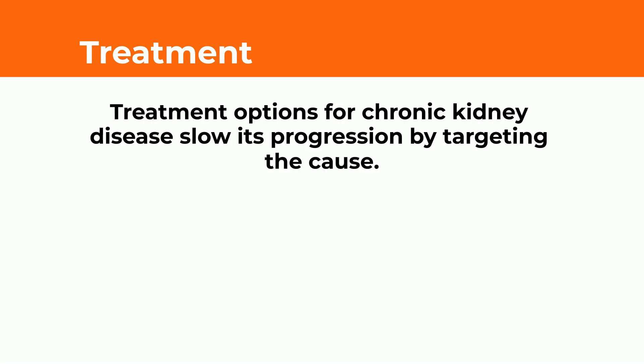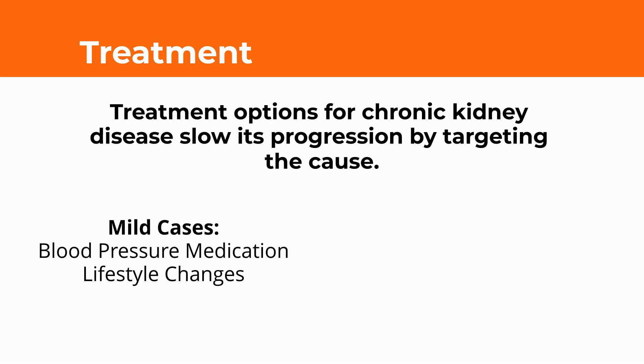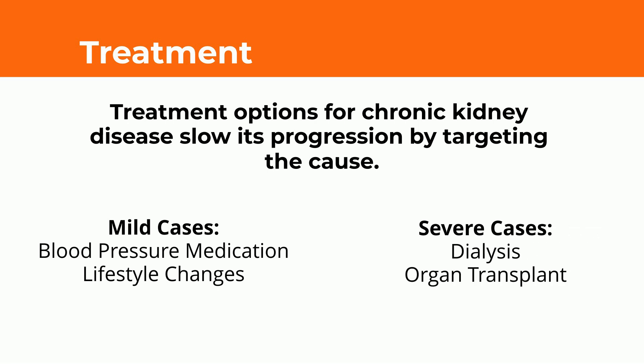Treatment options for chronic kidney disease target the cause of the kidney damage and aim to slow its progression into kidney failure. In less severe cases, lifestyle changes such as diet and exercise are recommended. Medications that deal with problems associated with chronic kidney disease can also slow its progression — for example, medication to manage high blood pressure in CKD patients with hypertension. In severe cases where CKD becomes kidney failure, a patient would either need dialysis treatment, which removes waste from the blood using a machine, or an organ transplant.